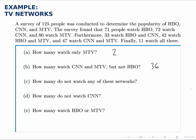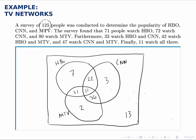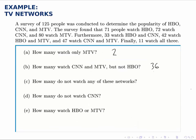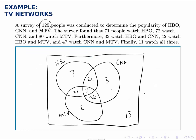Part C asks, how many do not watch any of these networks? And that would be the 13 outside all of the circles. How many do not watch CNN? It might be easier to start with those who watch CNN and subtract them from the 125 total, but we could also go here and add up all the numbers that are outside the CNN circle. So 7 plus 31 gives us 38, plus 2 is 40, plus 13 is 53.